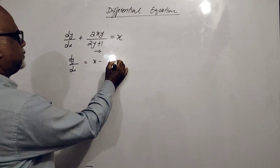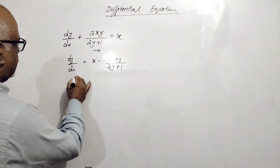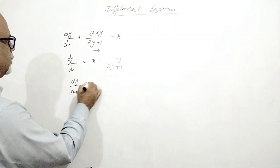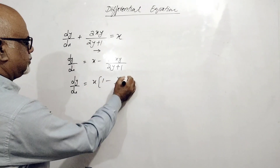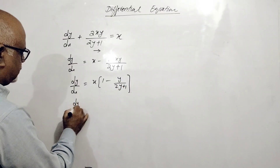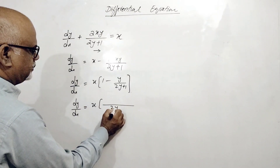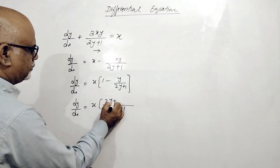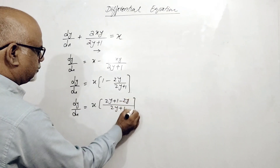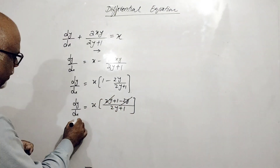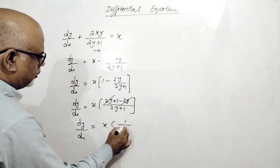We shift the term to the right-hand side. Then we take out x common and then find the LCM. After taking the LCM, this factor will cancel out, giving us dy/dx equals x times 1 upon 2y plus 1.